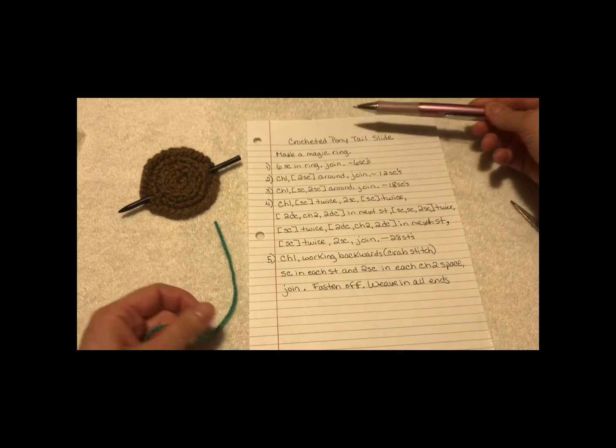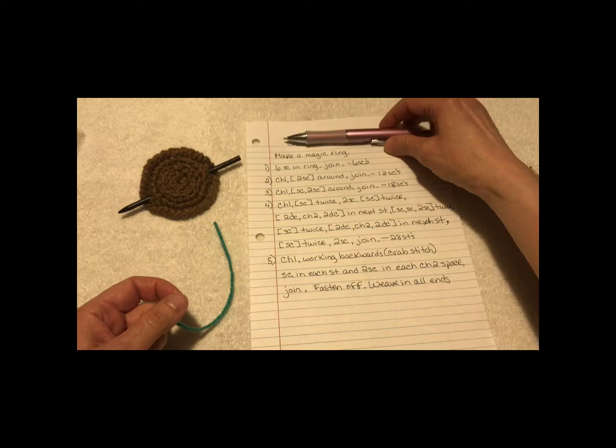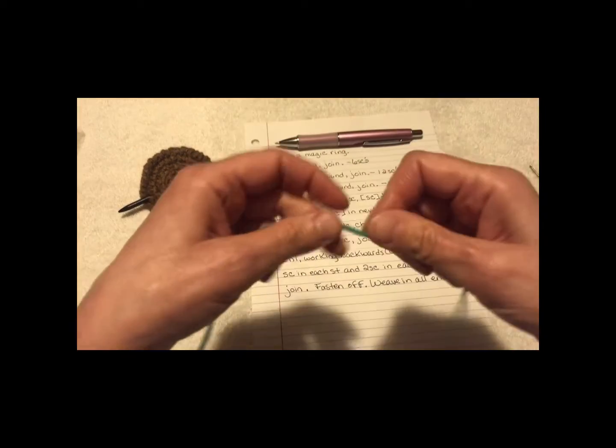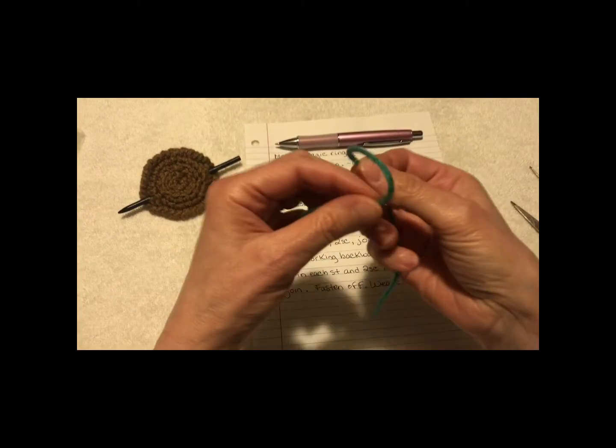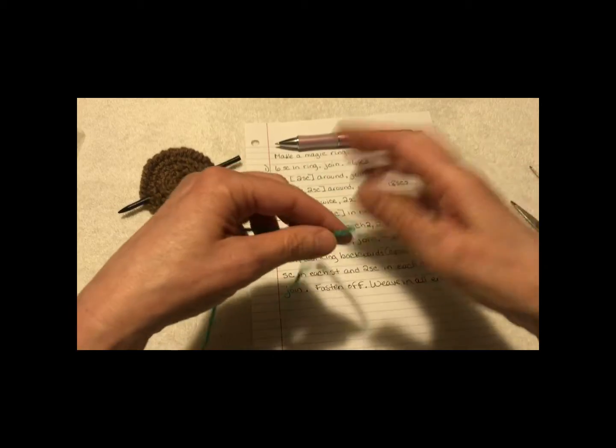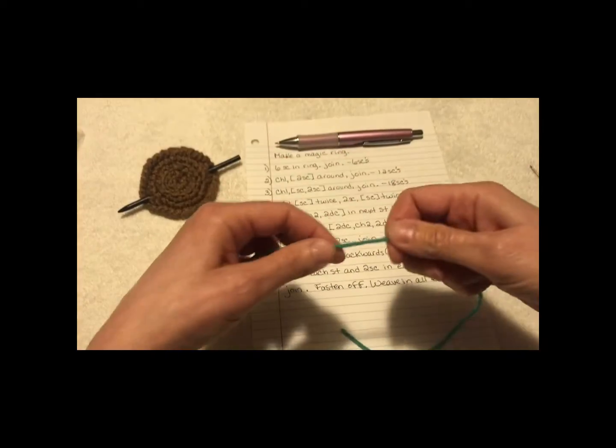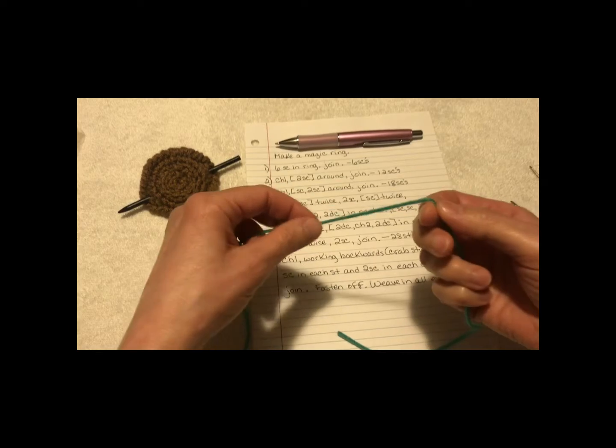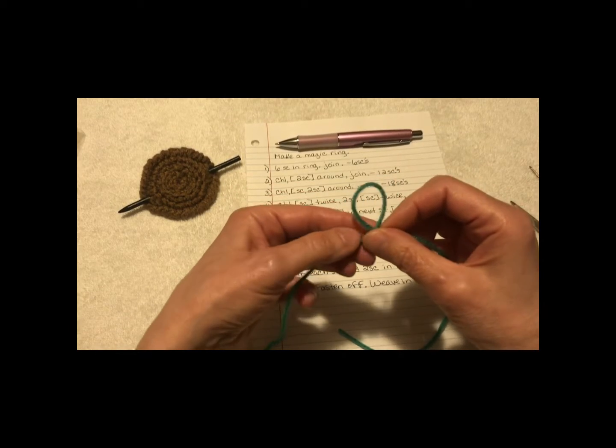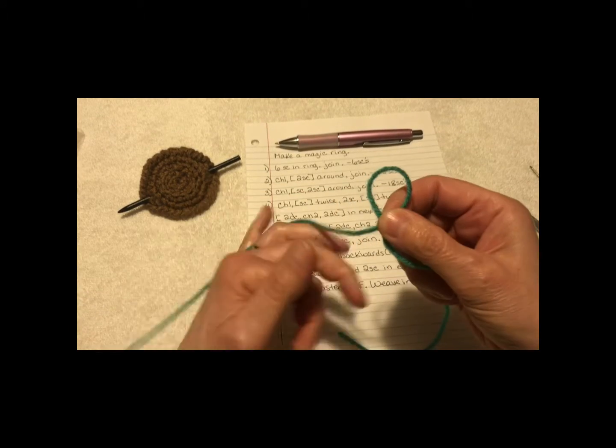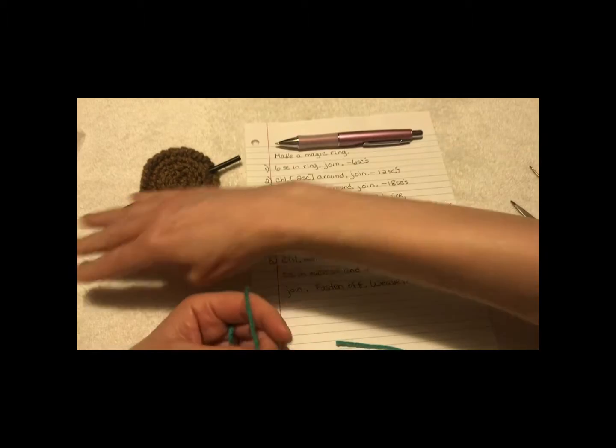Okay, first of all, you're going to make a magic ring. My magic ring, all I do... I like a long tail. That's really good for weaving in later. Okay, you twist it so the tail part is in front. Now 6 single crochets in the ring.